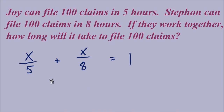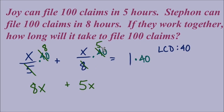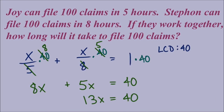We know we're multiplying by the LCD. For denominators 5 and 8 the LCD is 40. Multiplying 40 to each term and looking for canceling: from the first term, 40 over 5 leaves 8, giving 8x. From the middle term, 40 over 8 leaves 5, giving 5x. The right side: 1 times 40 equals 40. Combining terms on the left gives 13x. Dividing both sides by 13 leaves the simplified fraction 40-thirteenths, or the mixed number 3 and 1-thirteenth. Working together they'd finish in 3 hours and 1-thirteenth of an hour.